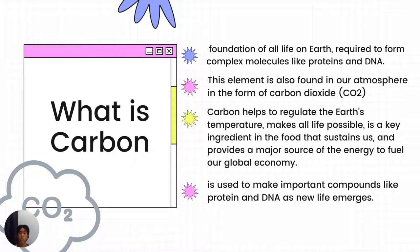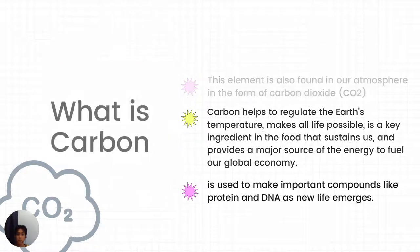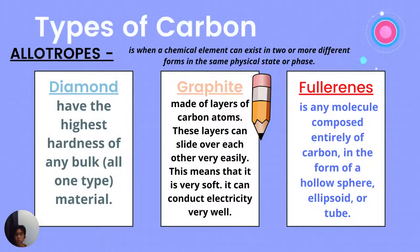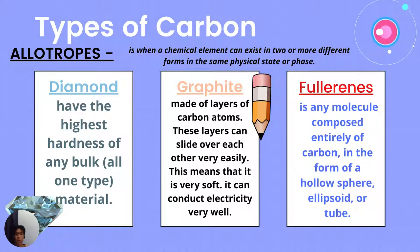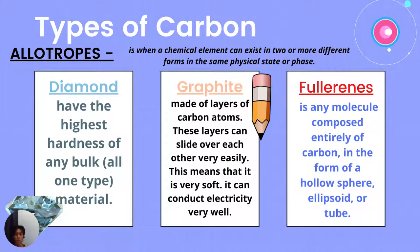It's also used to make important compounds like proteins and DNA as new life emerges. So, what are the different types of carbon? They are called allotropes — when a chemical element can exist in two or more different forms in the same physical state or phase. This is carbon in nature.